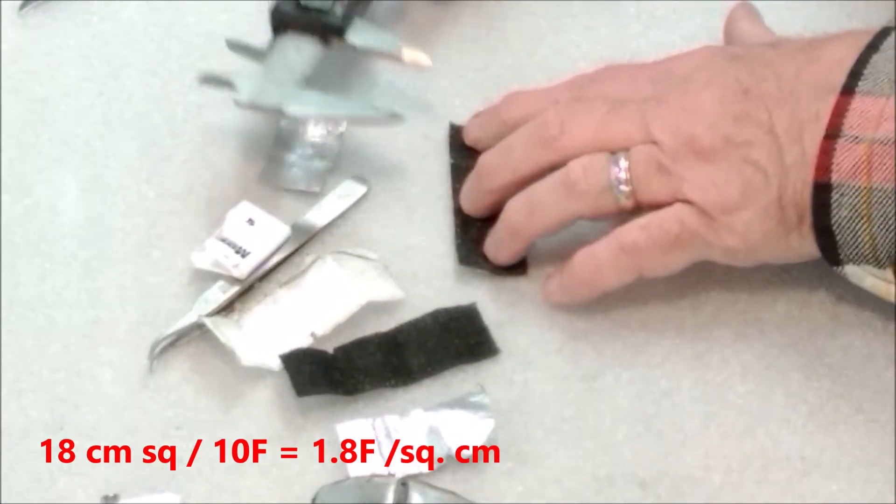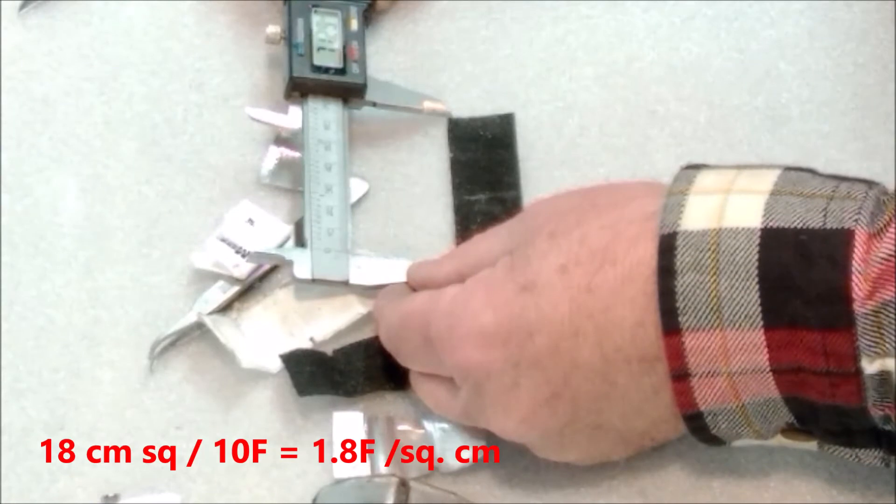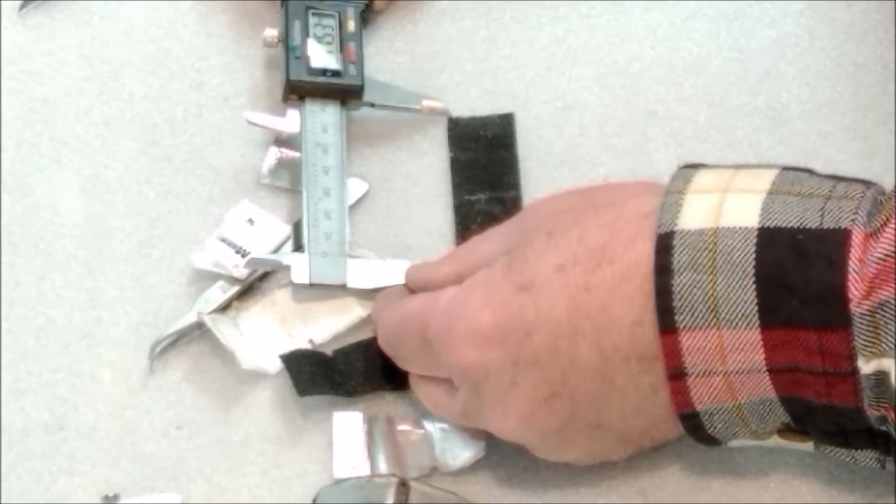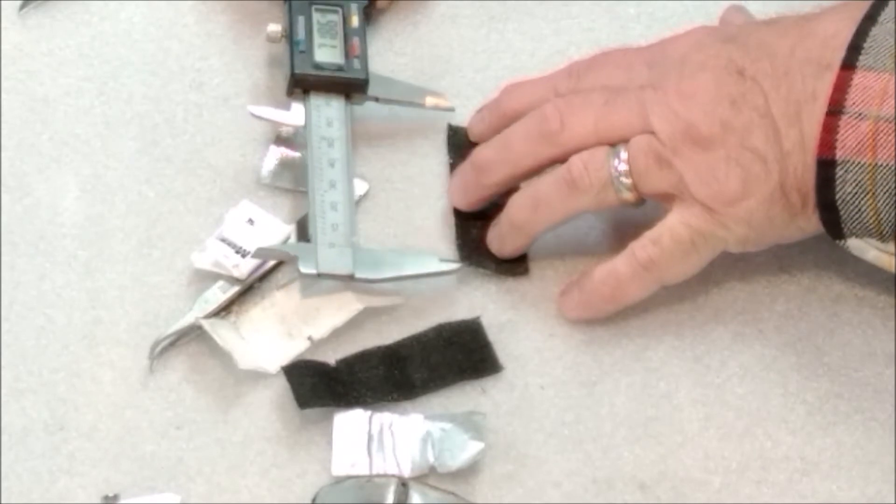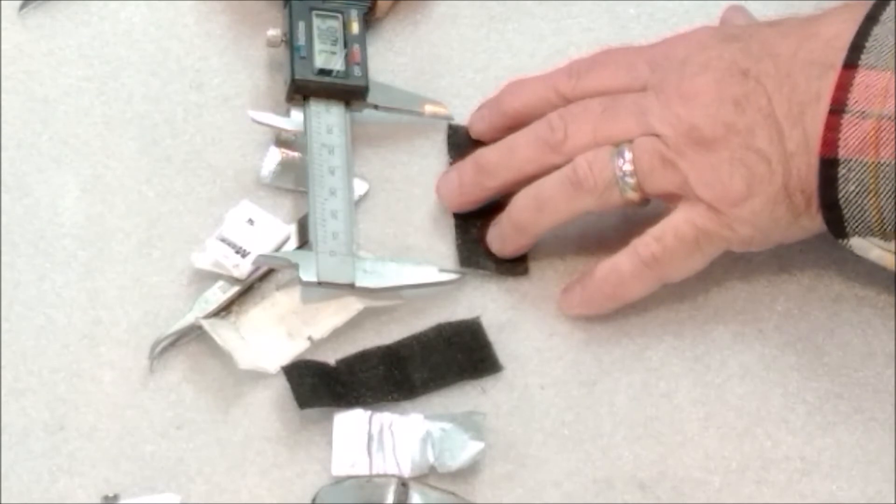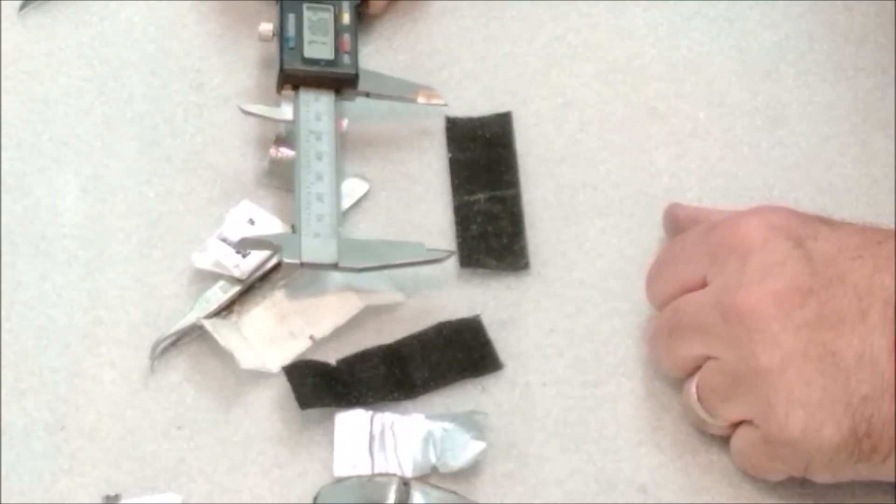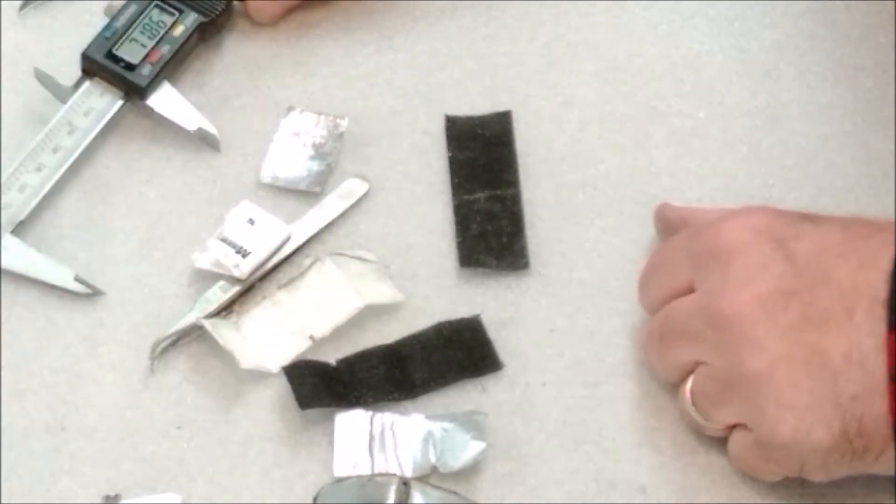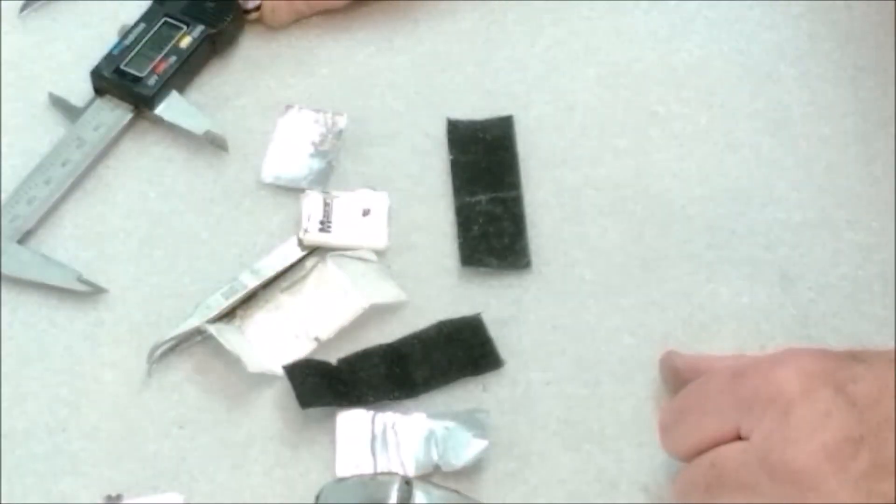And in terms of the length of that electrode, pretty close to, well, just under 72. Let's call it 72 by 25 millimeters for the two electrodes. So that amount of area yields 10 farad. And this is a nominal two and a half volts.